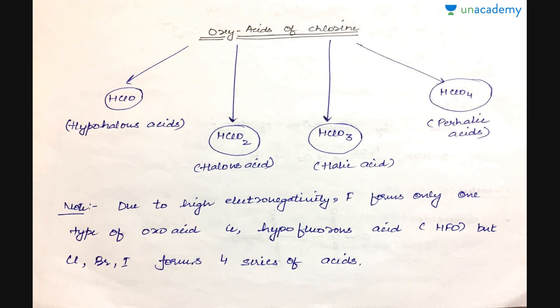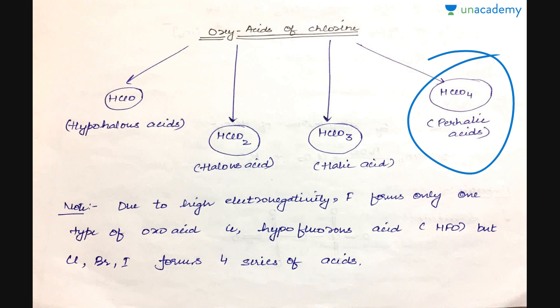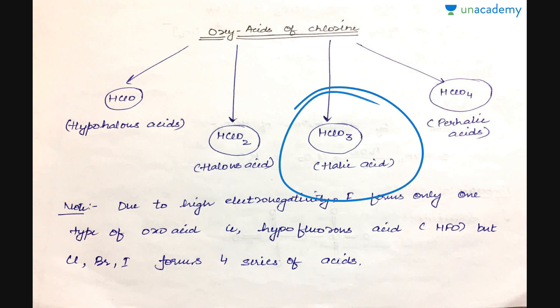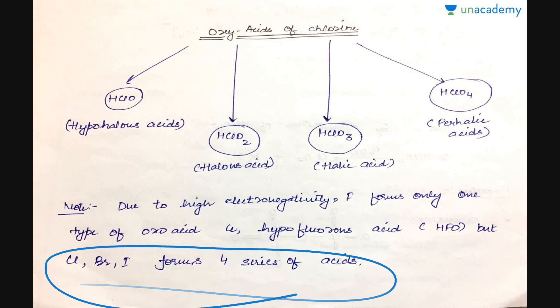In this section we will learn about oxy acids of chlorine — not in general, but a comparative study of the oxy acids of all the halogens. We have four types of oxy acids: hypo halous acids, halous acids, halic acids, and perhalic acids. Due to very high electronegativity, fluorine forms only one type — hypofluorous acid — whereas chlorine, bromine, and iodine form all four series.